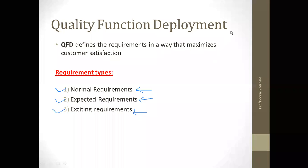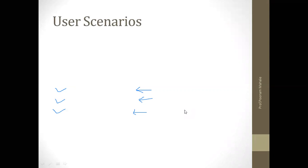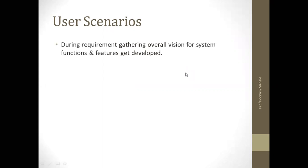Next is user scenarios, which are used in eliciting requirements. During requirement gathering, an overall vision for system functions and features gets developed. But in order to understand how these functions and features are used by different classes of end users and developers, we need scenarios. If we want to understand how the functions and features are used by different users, developers and users create a set of scenarios, and those scenarios will identify all the relevant issues.